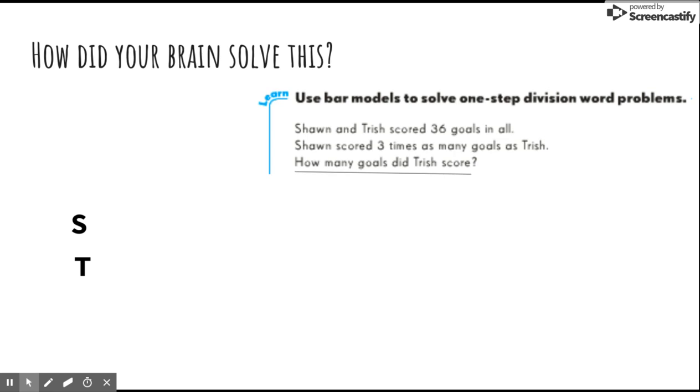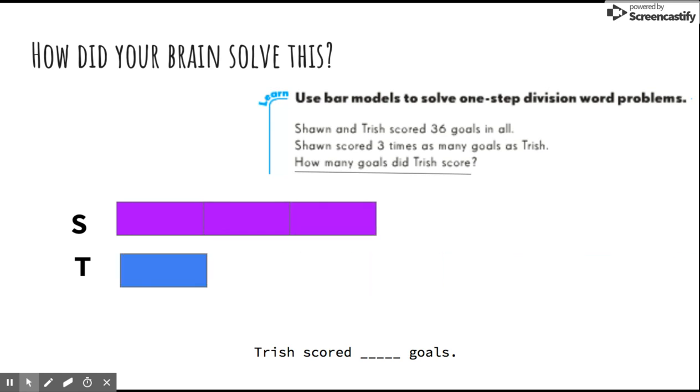First, I underline the question. Then I will write the question as an answer. Now I have to represent the problem using a bar model. I would show that Sean has three units and Trish has one, since it says Sean scored three times as many goals.